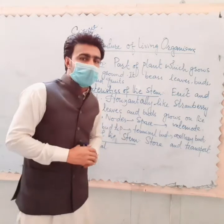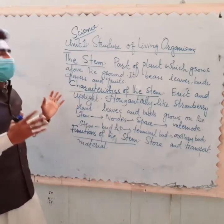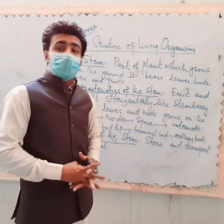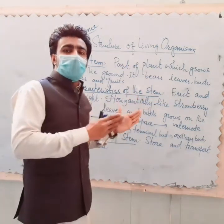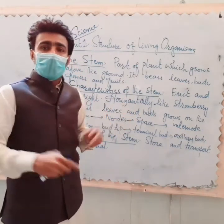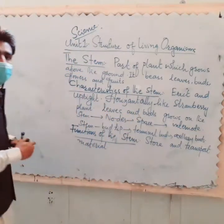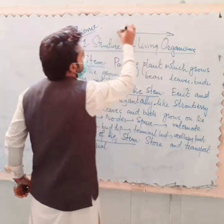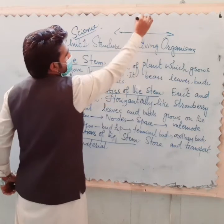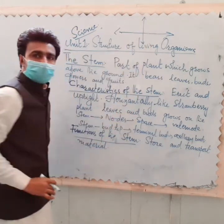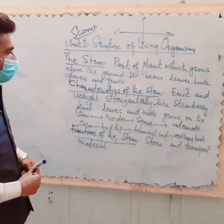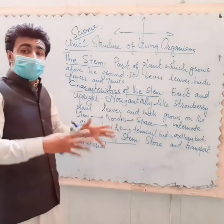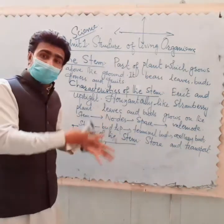The characteristics of the stem: it grows erect and upright. Stem can grow horizontally and vertically. Horizontally means left to right and vertically means top to bottom. This is shown in the figure. Some stems grow horizontally, like strawberry, and some stems like ginger and potato grow under the ground.